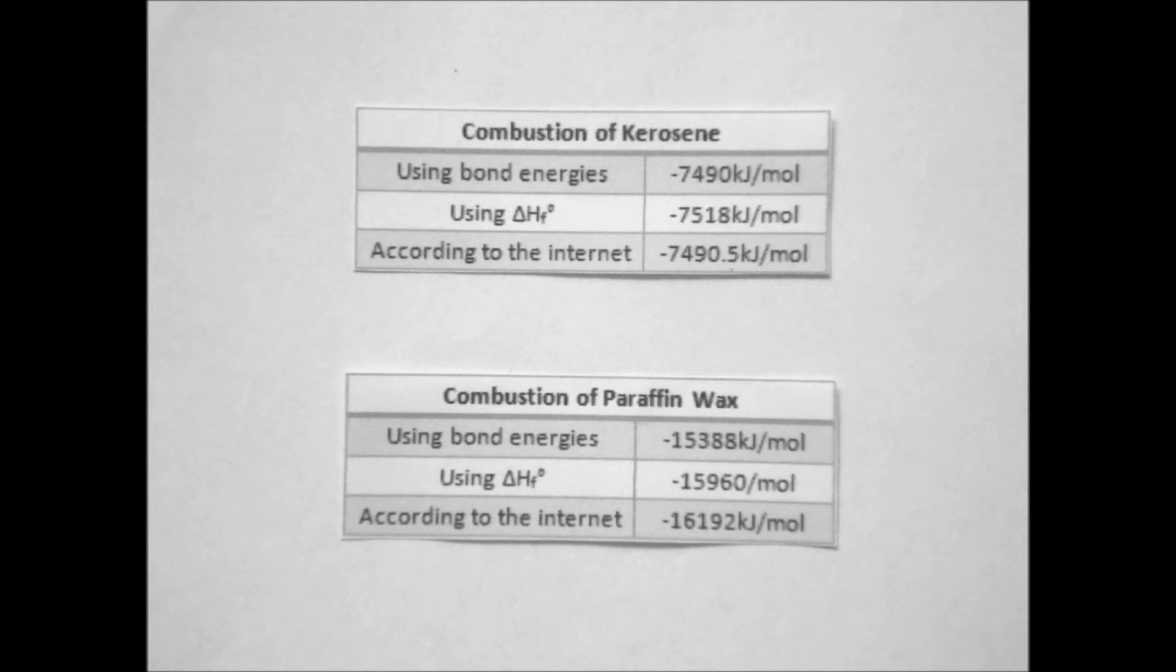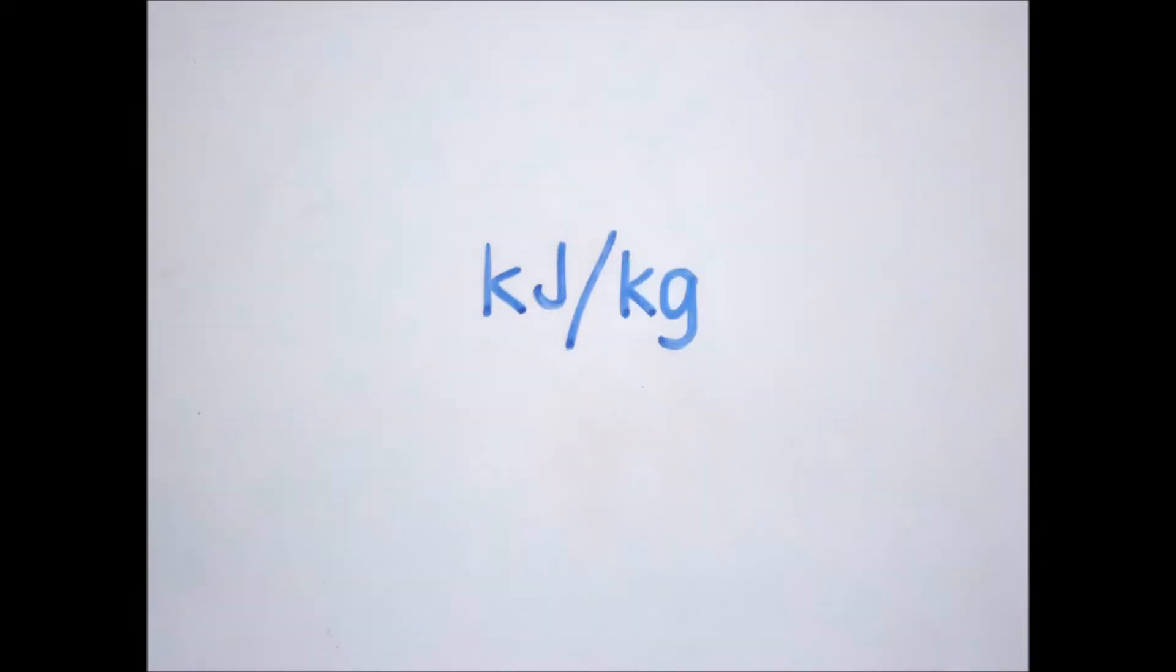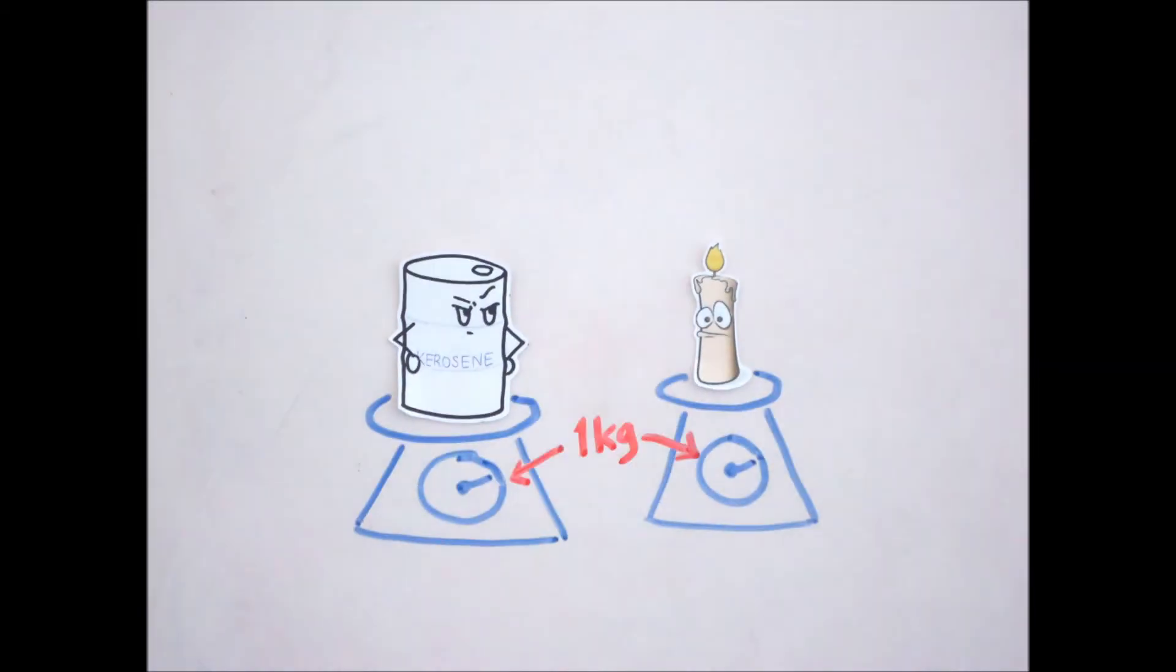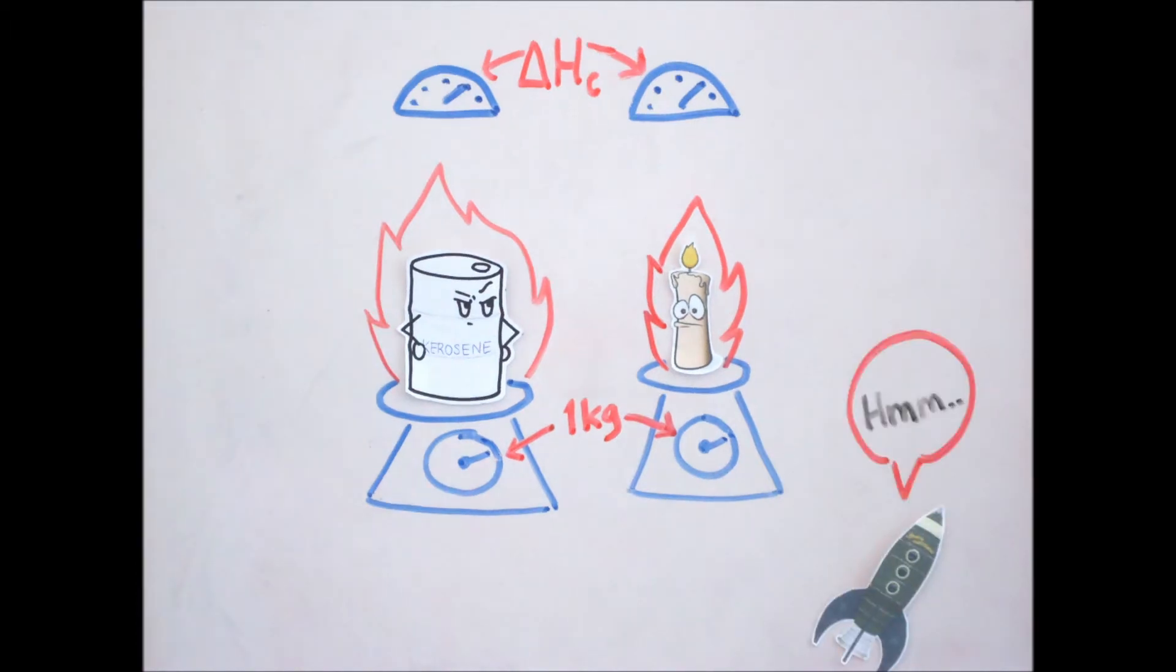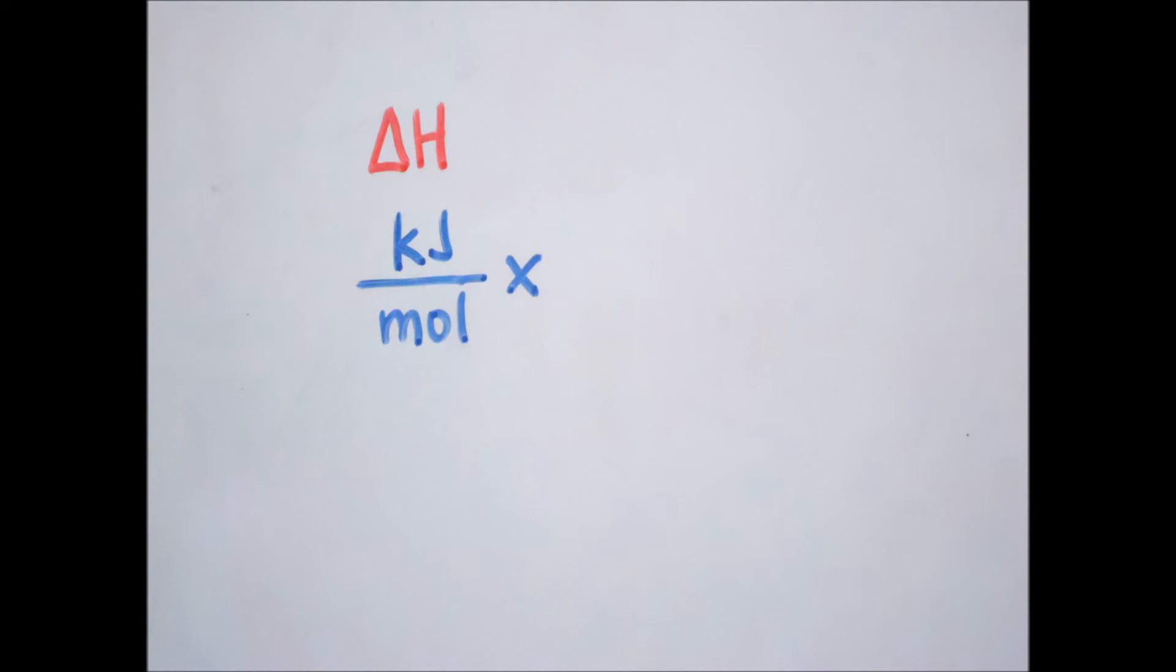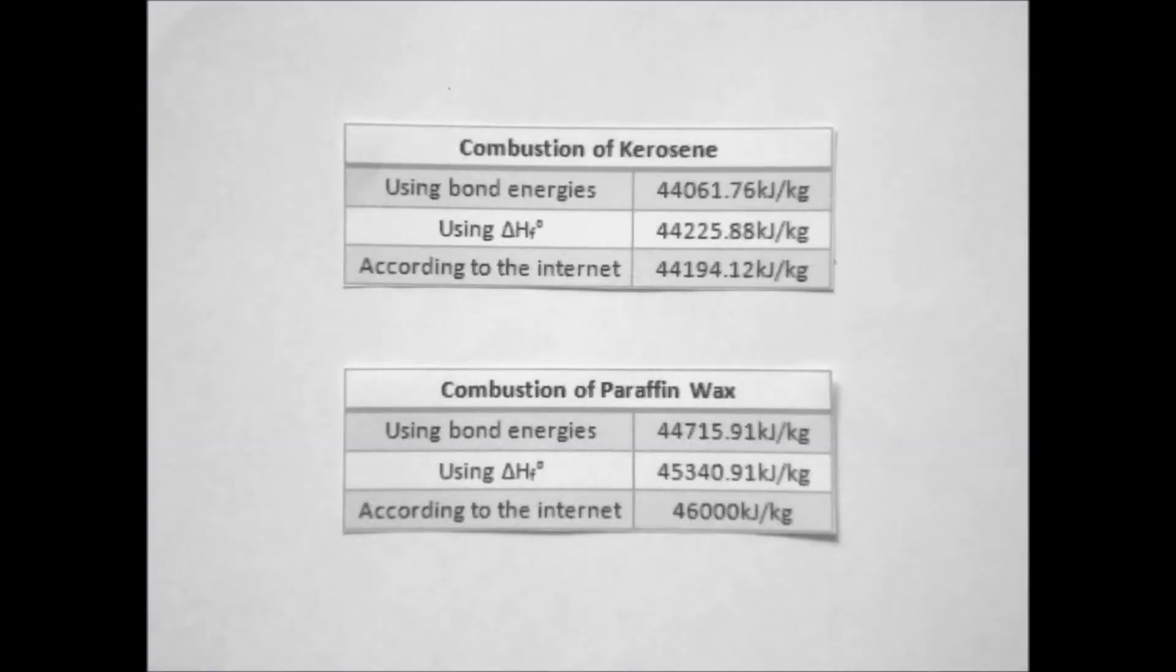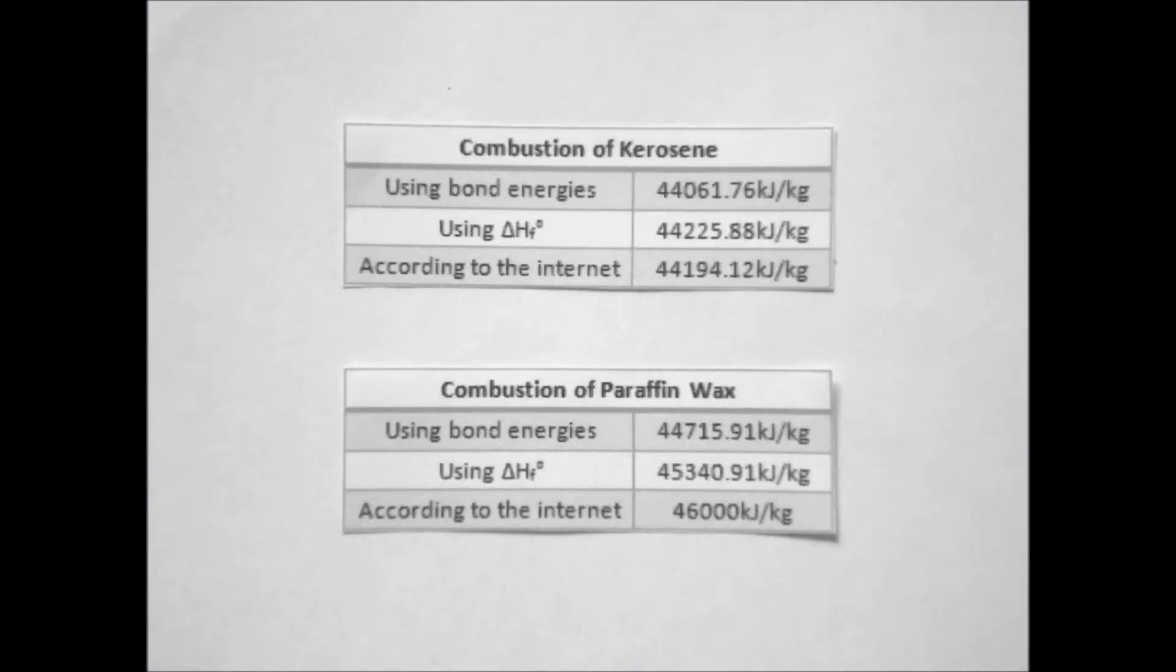By converting the heat of combustion from kJ per mole to kJ per kg, we will be able to determine which fuel can give off greater heat per kg of the fuel, and therefore decide which one would be able to produce a greater thrust force for the launch of our rocket. To do this, we divide the heat of combustion by the molar mass of the substance. Whichever source we choose to look at, it is clear that paraffin wax releases more heat of combustion.